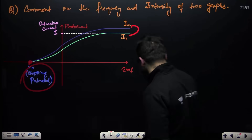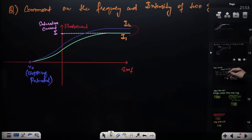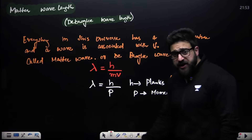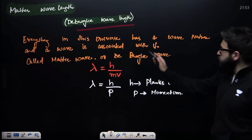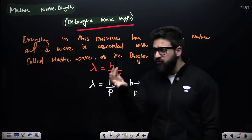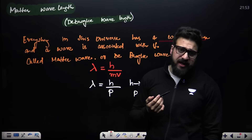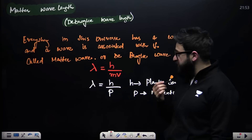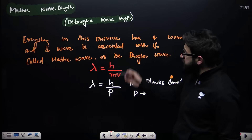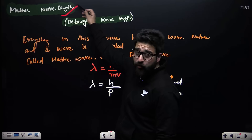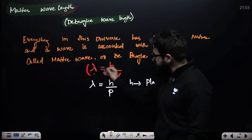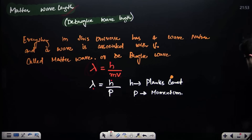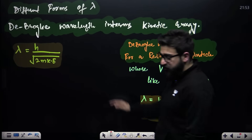De Broglie said everything in the universe has both particle and wave nature. Even this pen has a wave associated with it — that is the matter wave or de Broglie wave. The wavelength of that wave is h divided by mv, or h divided by p, where p is the momentum.